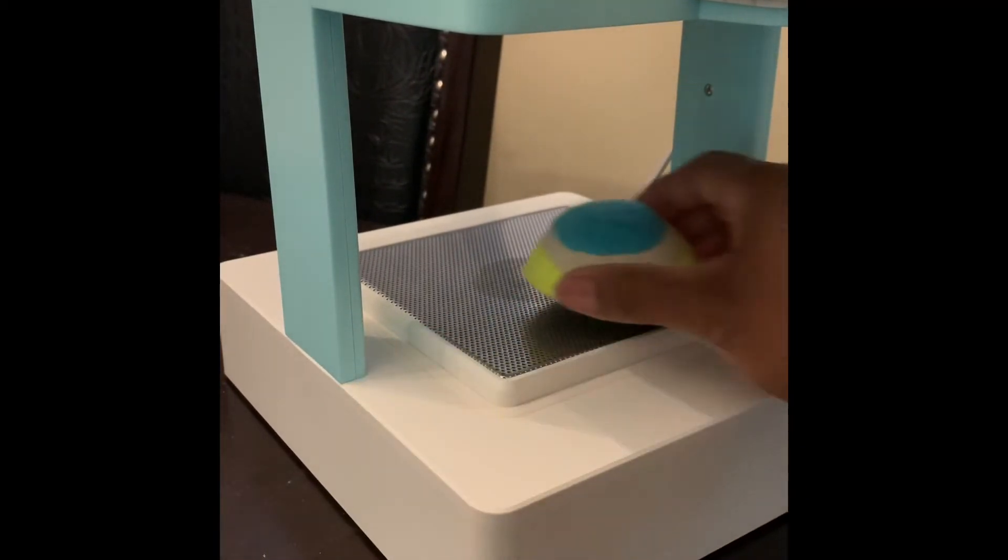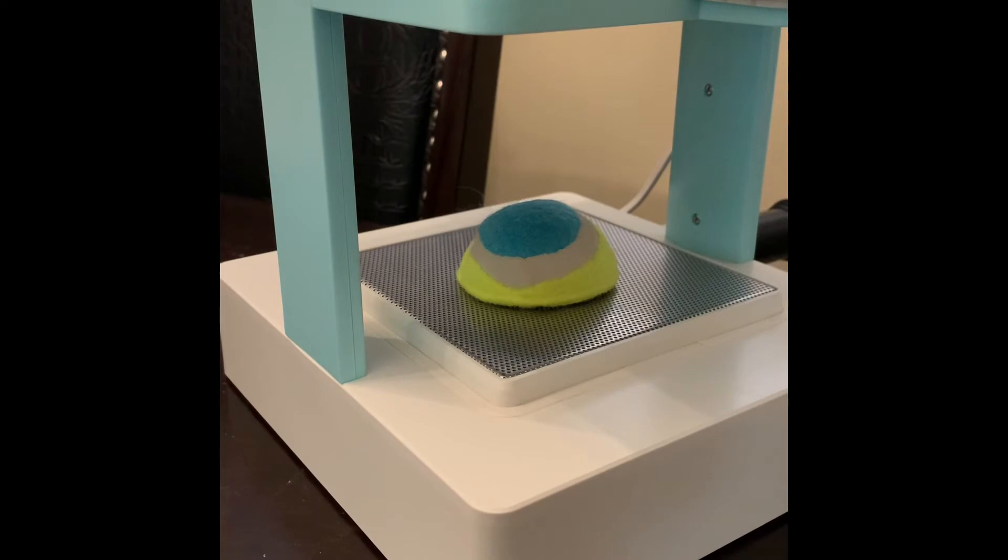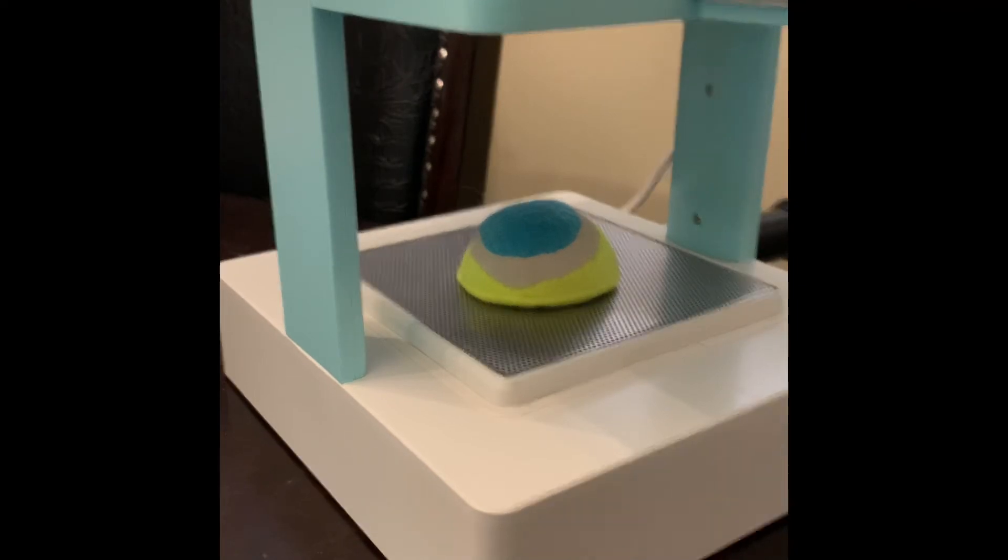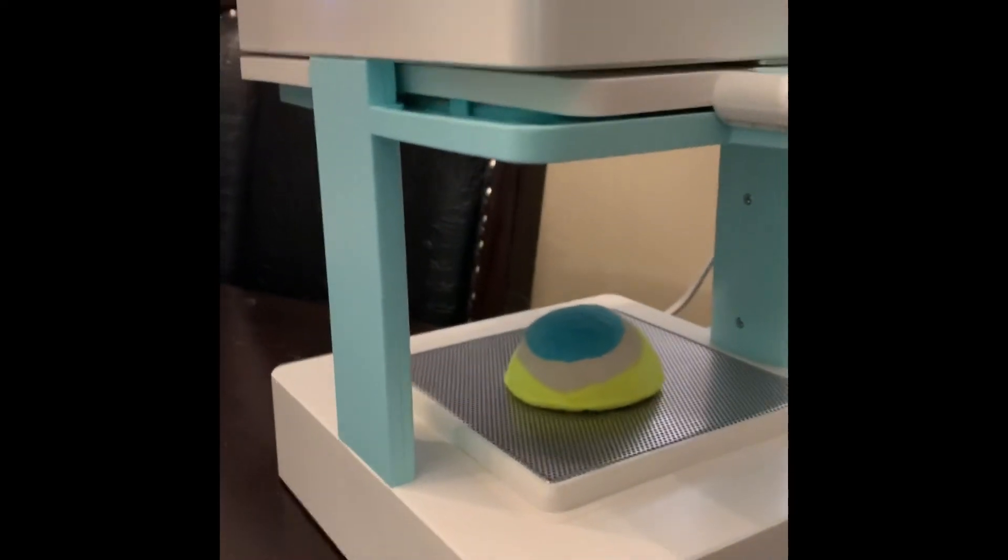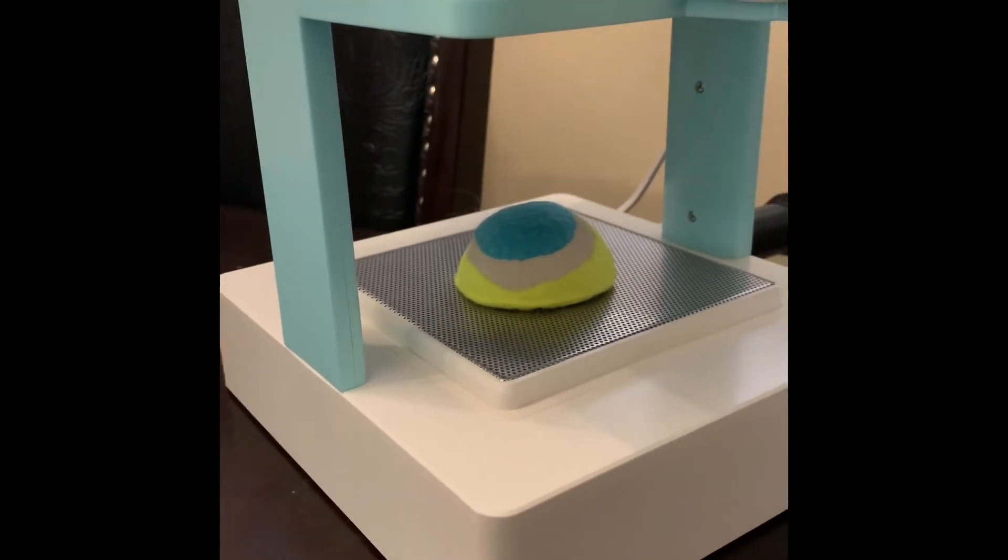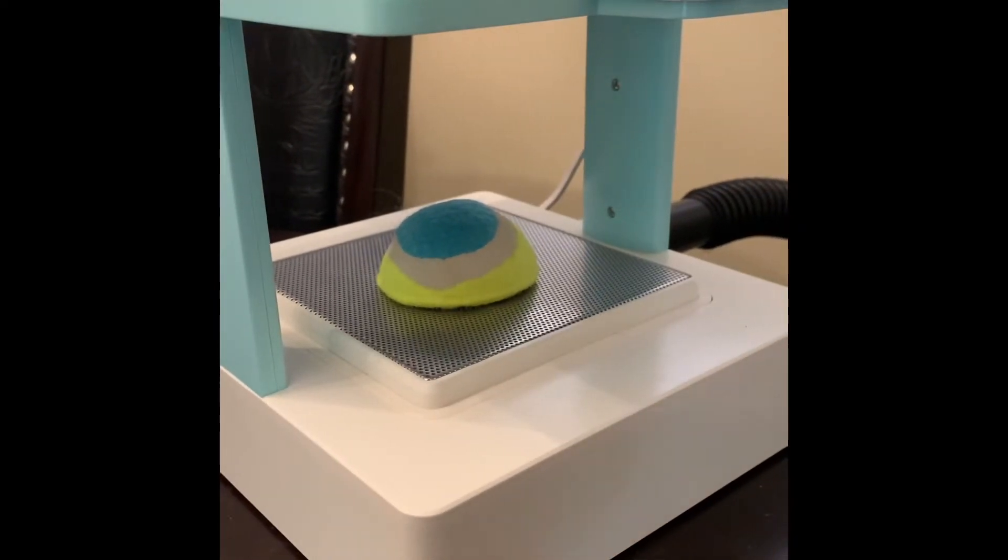I'm going to take this sphere, put it right in place. I'm going to turn my shop vac on that's connected right there so it can vacuum suction when I go ahead and do the mold press. So I'm going to turn it on and then press it down.